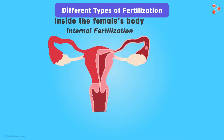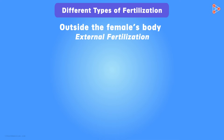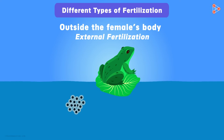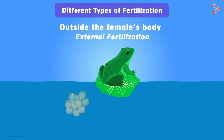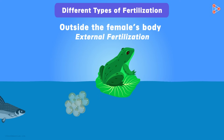The next type is external fertilization. As the name suggests, the process involves fusion of gametes outside the female's body. Frogs are examples belonging to this category. In this case, the unfertilized eggs are released in the water, and the sperms from the male body are released on these eggs to fertilize them. As a result, the fertilization process is accomplished in the water, outside the female's body. Many aquatic animals including fish exhibit this type of fertilization.